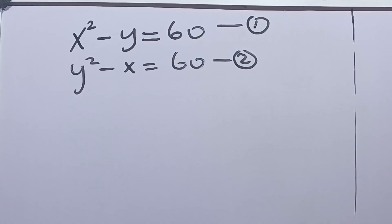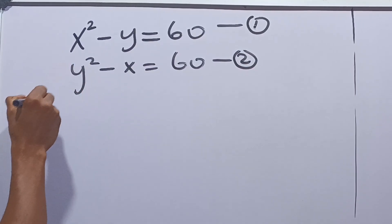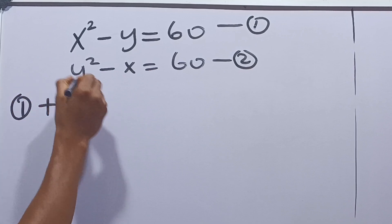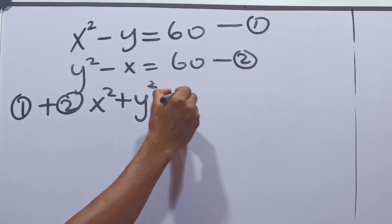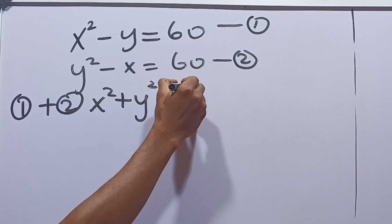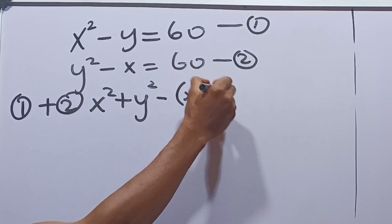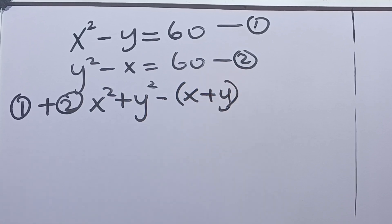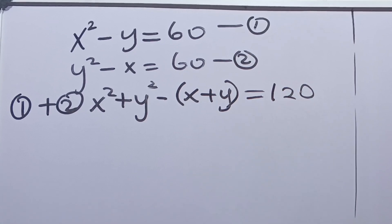This result is very important for us. Let's now add equation 1 and equation 2. We have x squared plus y squared minus x plus y is equal to 120.